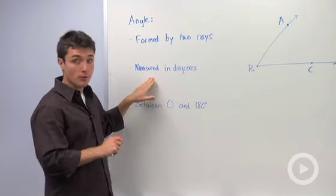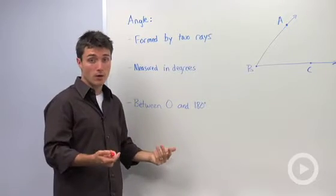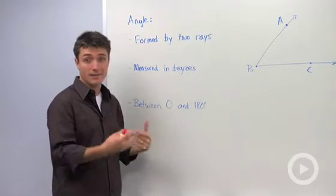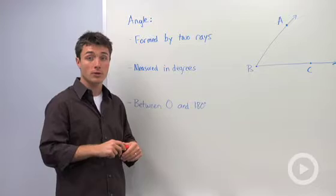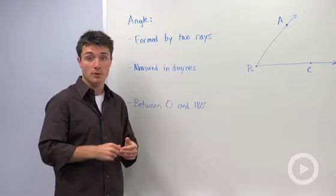It's measured in degrees and it's between zero and 180 degrees. If it's over 180, then you're going to subtract that number. So let's say you had 220 degrees, you're going to subtract 180 from that, so it's actually a 40 degree angle.